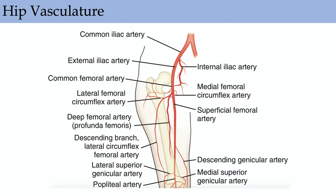Here's the vascular anatomy of the proximal femur. You should basically memorize the major branches, especially the common iliac, the superficial femoral, and the deep profunda. The superficial femoral artery is your major blood supply of the proximal thigh.